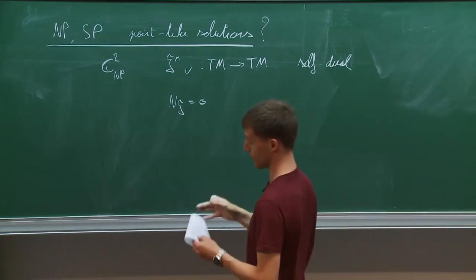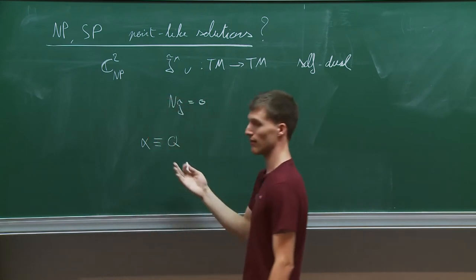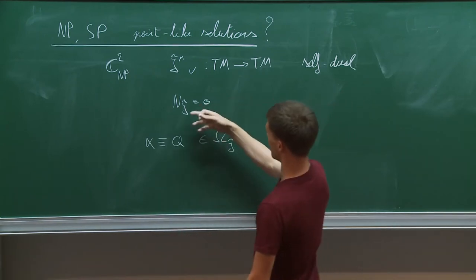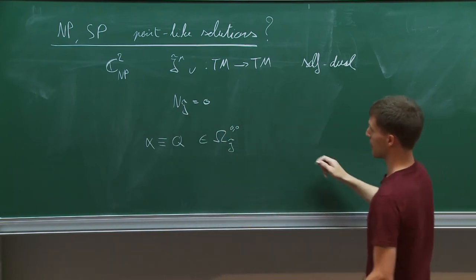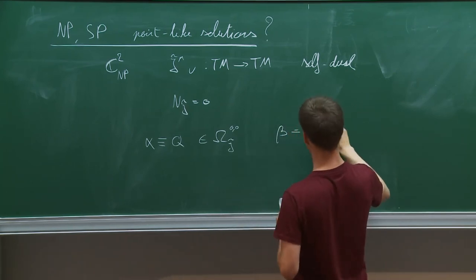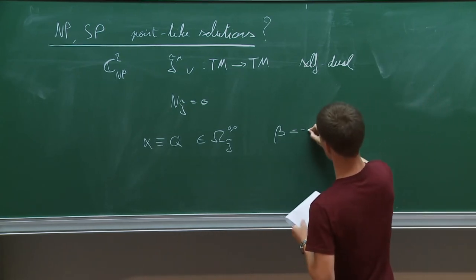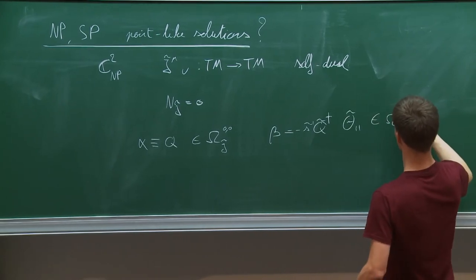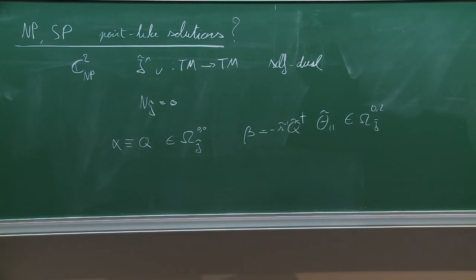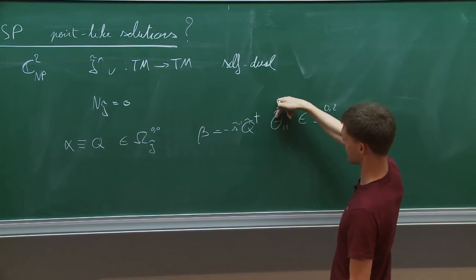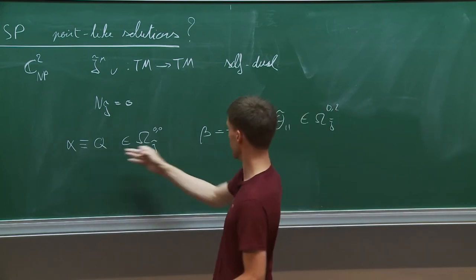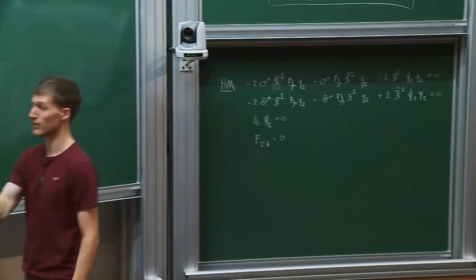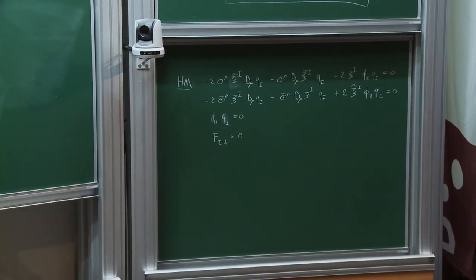With this object in place we can analyze the equations locally around the North Pole. Define alpha to be the hypermultiplet scalar that is a (0,0)-form with respect to this almost complex structure, and beta as essentially the other scalar — specifically the complex conjugate with some dressing — which is a (0,2)-form, an anti-holomorphic two-form. Roughly, alpha is q and beta is q-tilde dagger.